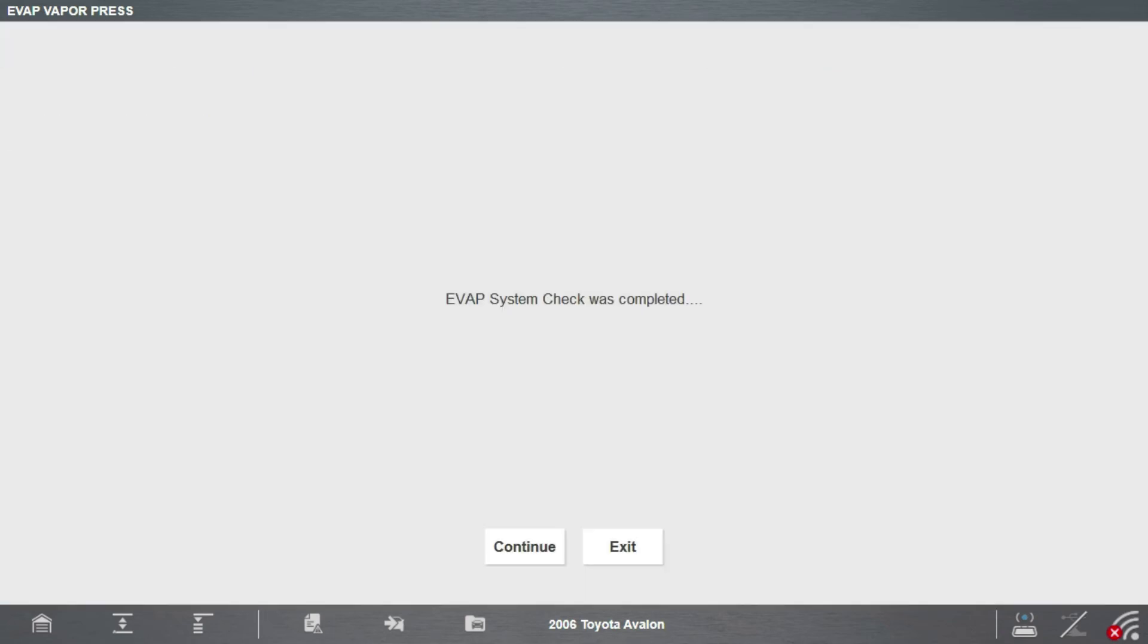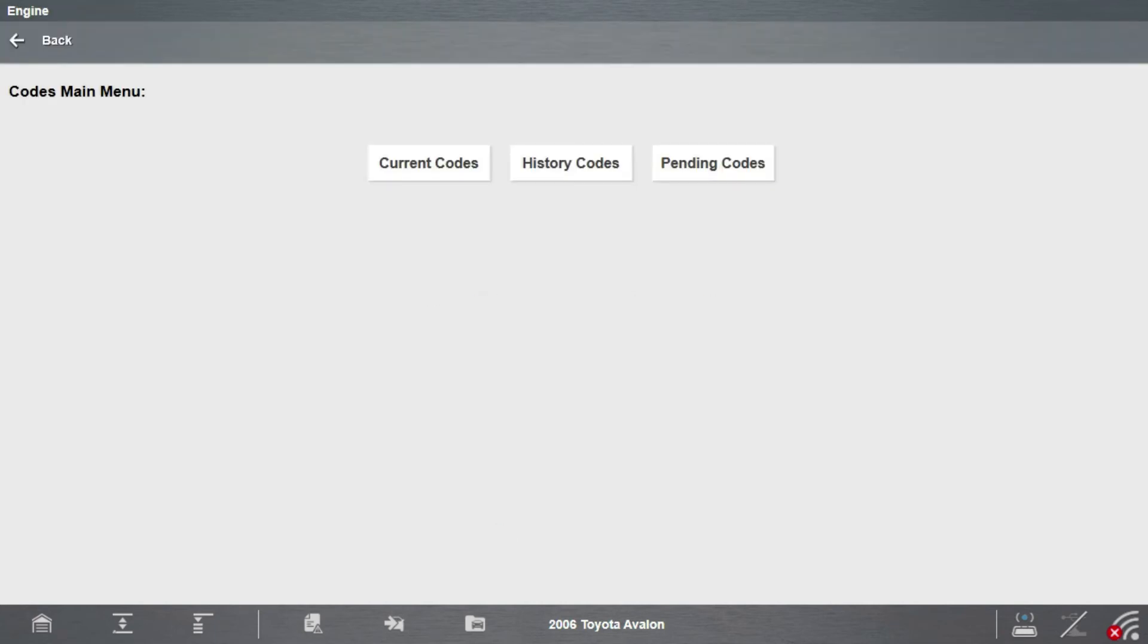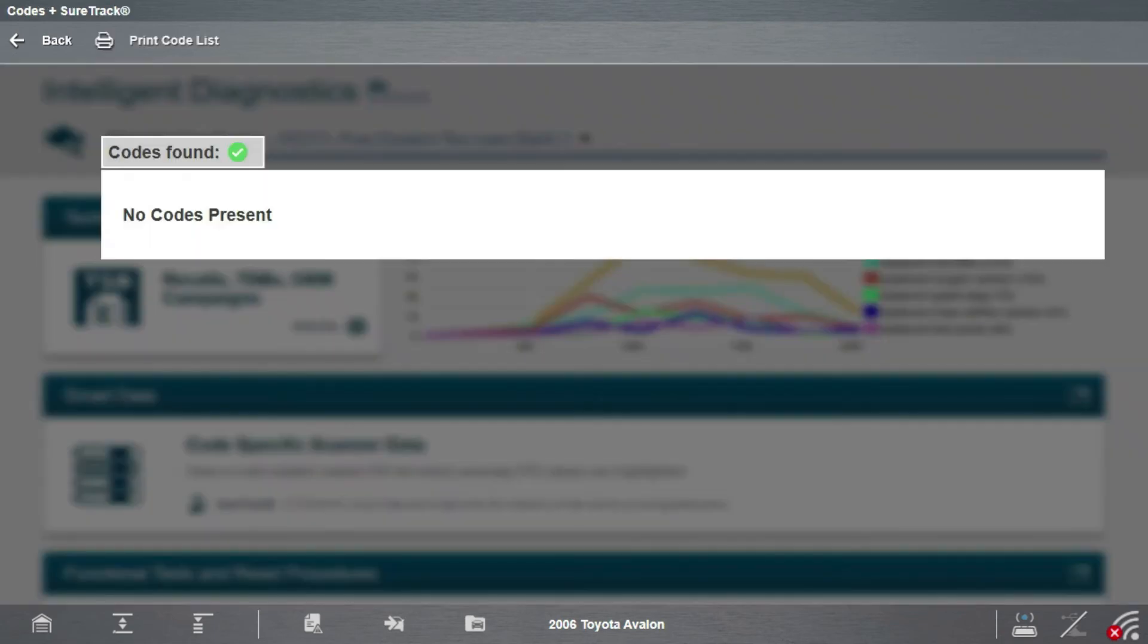So now I got to do what I did before. Test is completed. I'm going to check my pending codes. If we're successful, no codes present. That's it. There was gross leak and no leak on a Toyota key-off EVAP system.